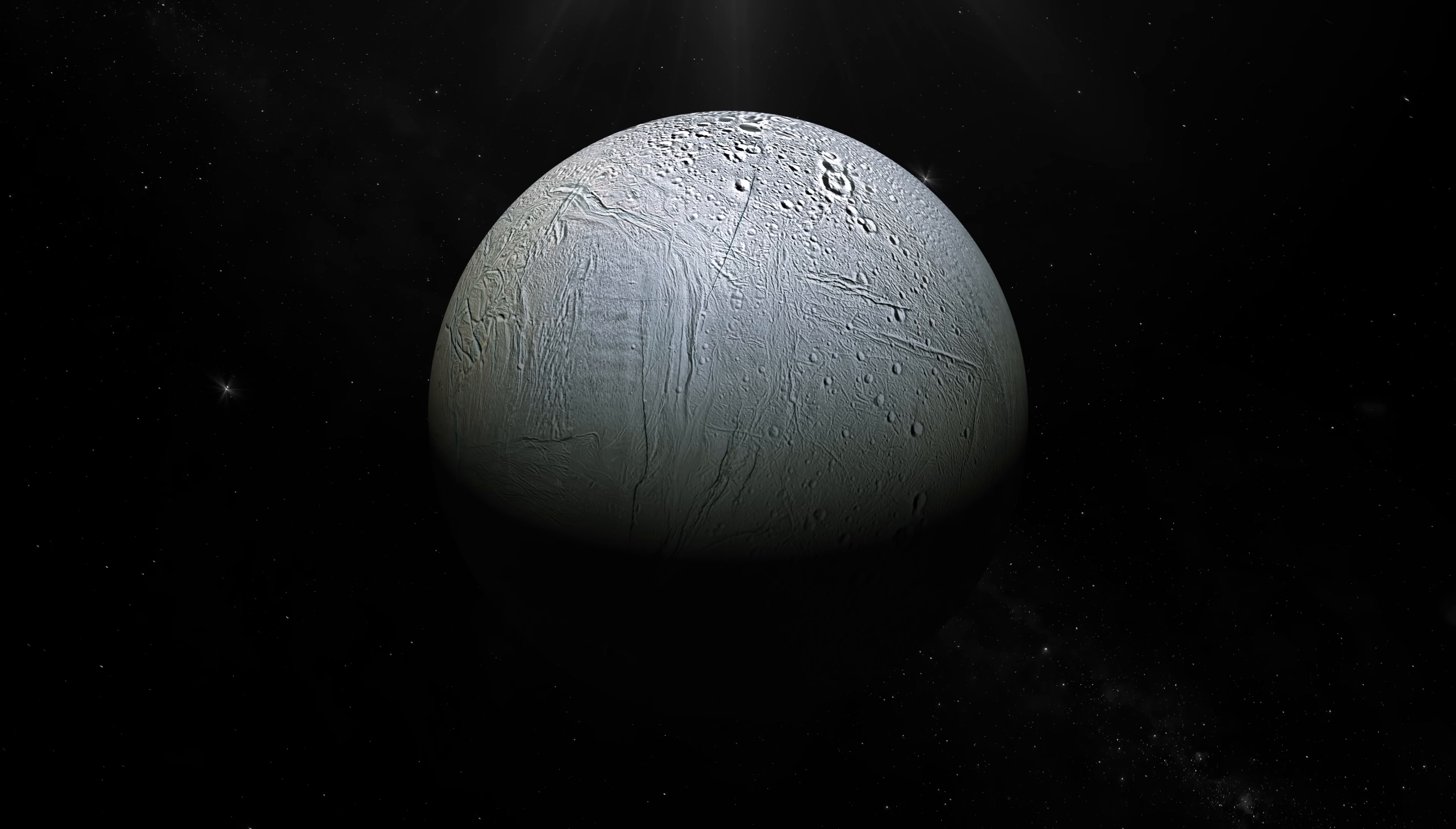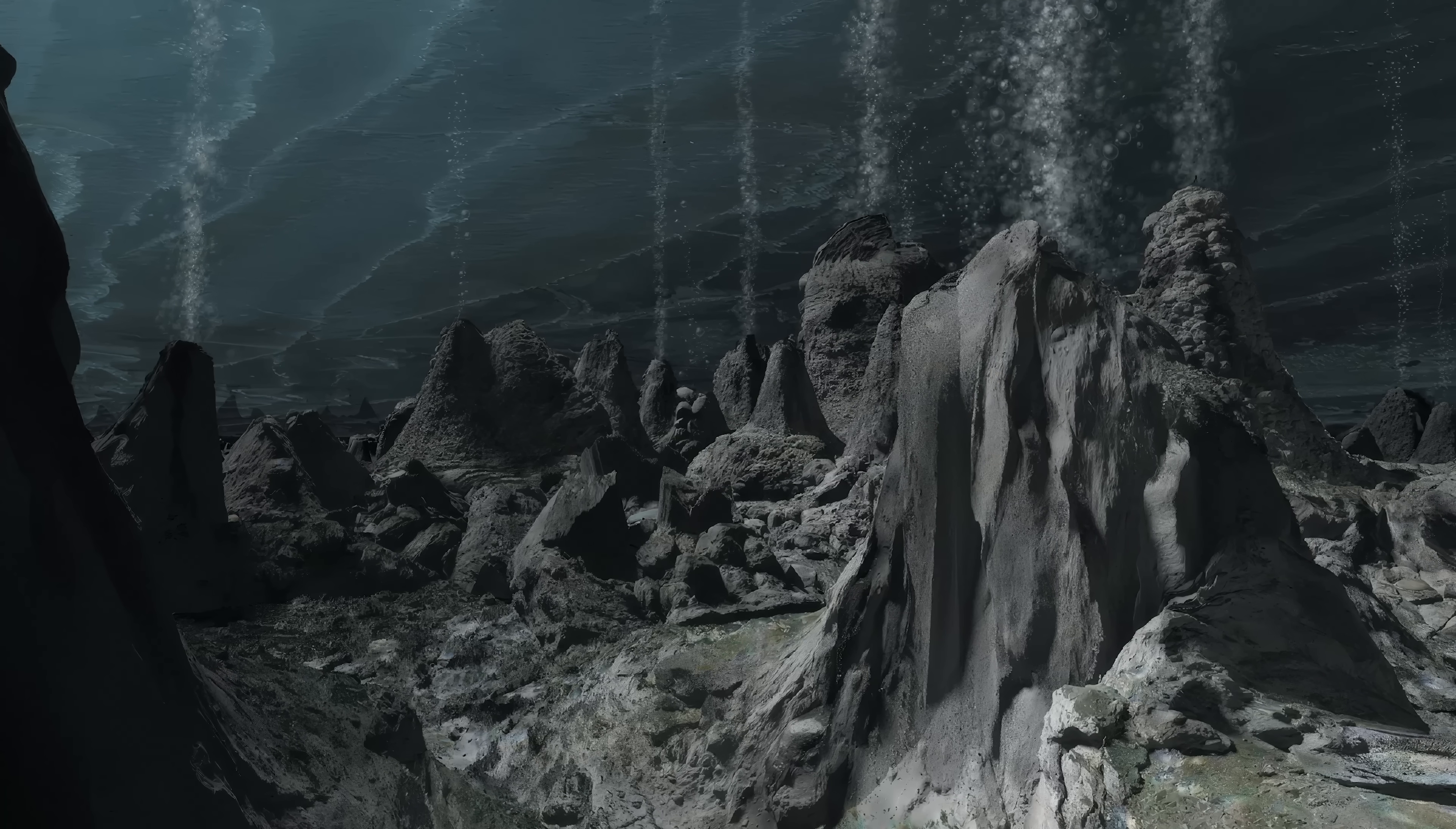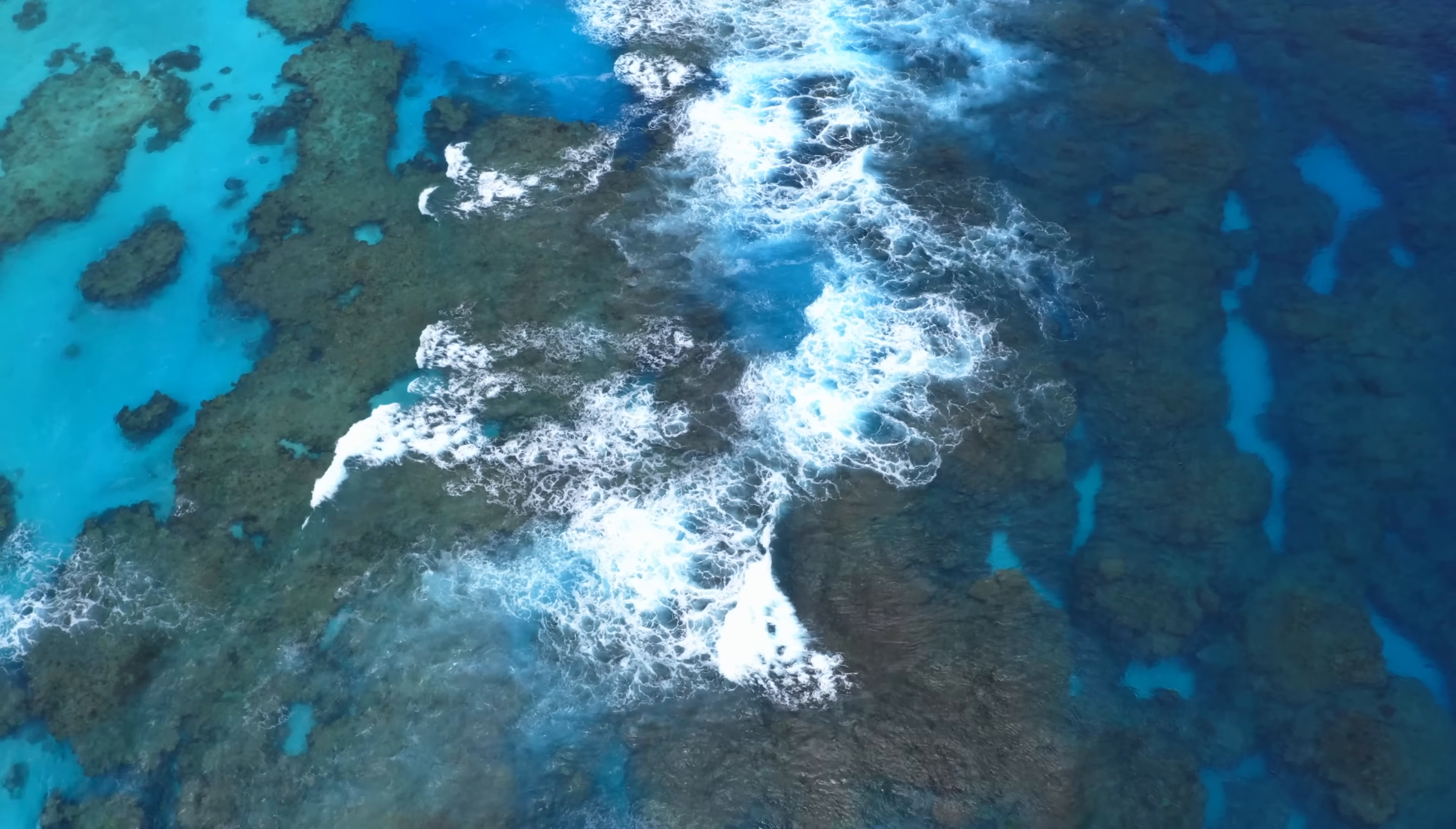Here's the problem: Enceladus has no sunlight, no volcanoes, no surface chemistry. By all known rules, this moon should be dead. Yet the chemistry screams life could be here. The leading theory? Alkaline hydrothermal vents on the ocean floor. On Earth, similar vents create white smokers that pump out hydrogen-rich fluids, perfect for fueling microbes.